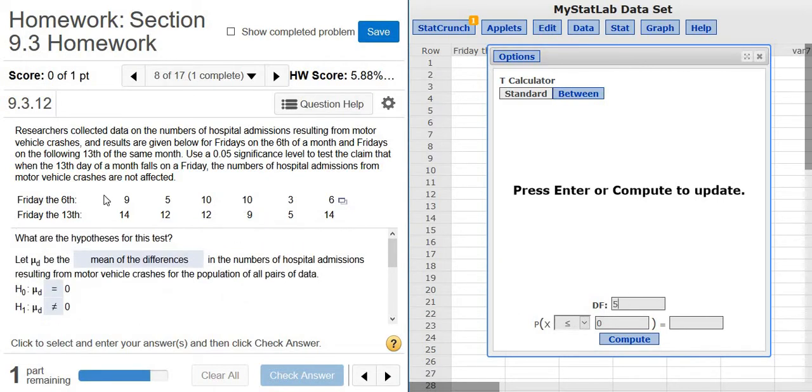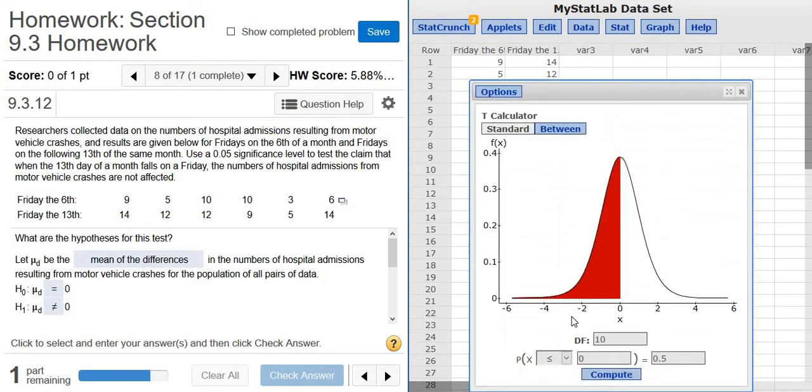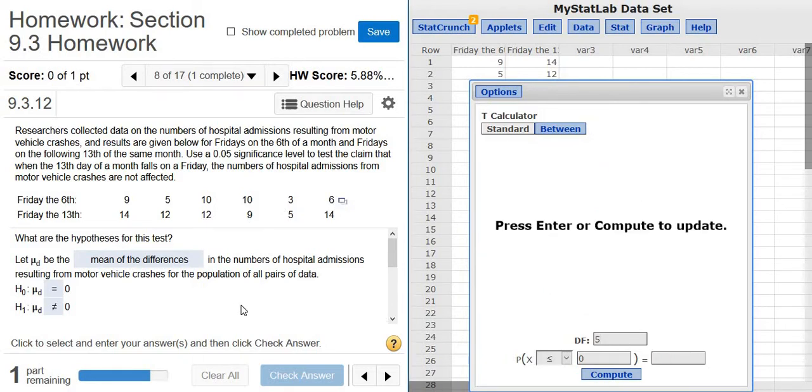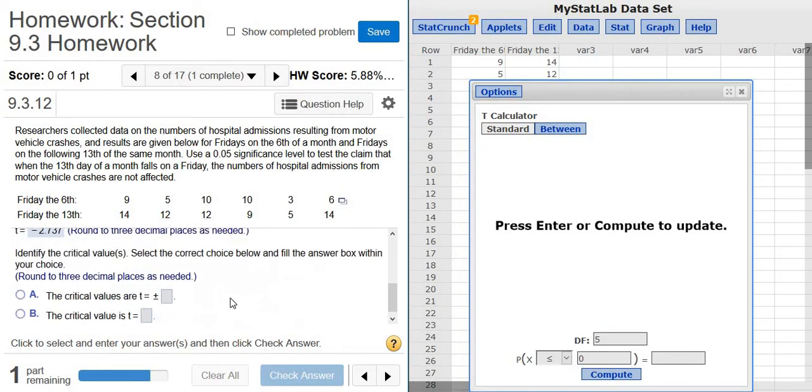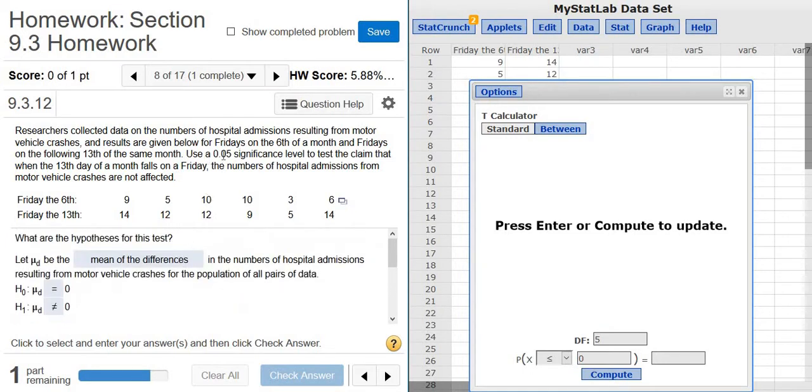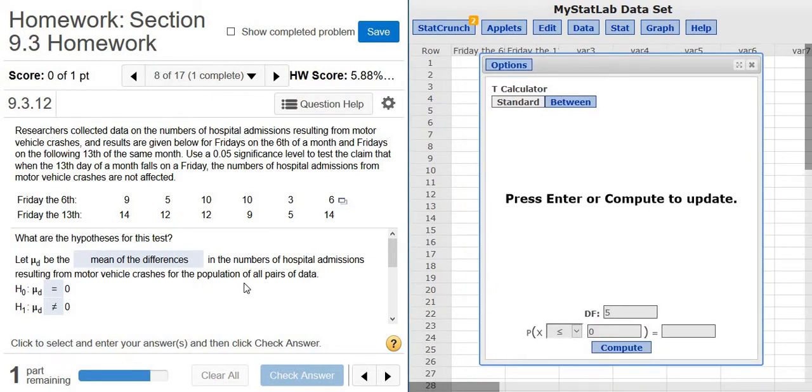So again, you count the pairs. Stat, Calculators, t. You count the pairs: one, two, three, four, five, six. It's one less, so it's five. And alpha, we need to use alpha for this. Alpha right here is the level of significance, that's called alpha, it's 0.05. So because it's a two-tailed test, we have to divide it by two. So 0.05 divided by two is 0.025, and you put that in the second box.